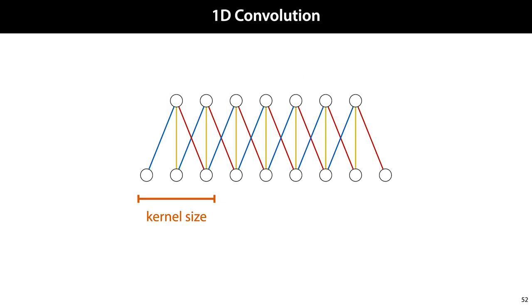Here's how that looks if the input is one-dimensional, a sequence of units rather than a grid. Note that the connection colors indicate shared weights. That is, every blue connection has the same weight.